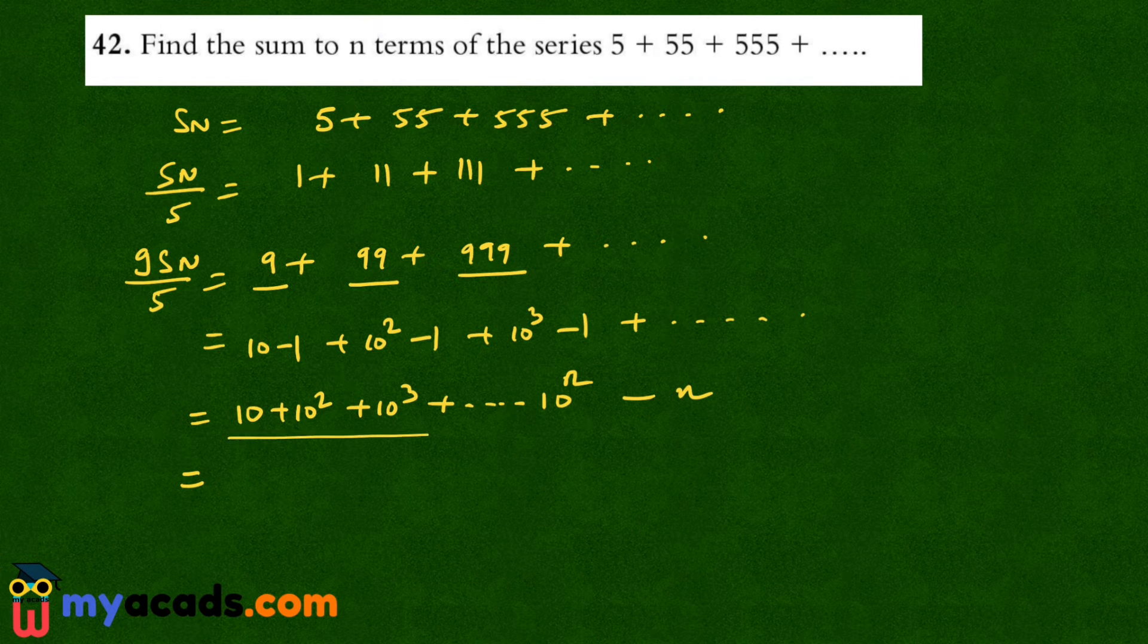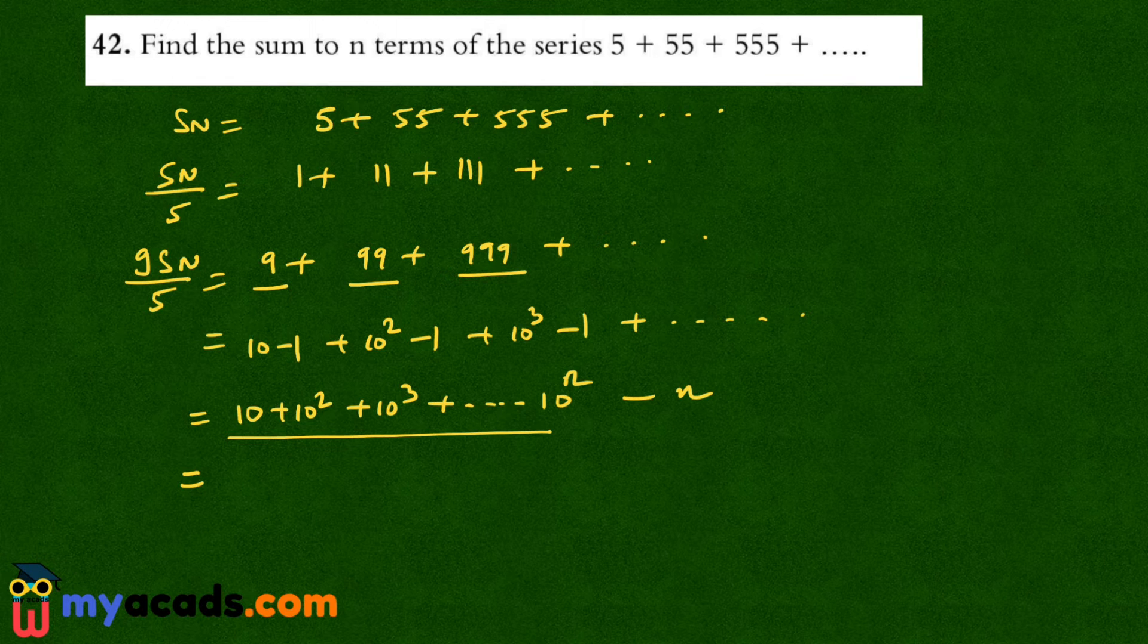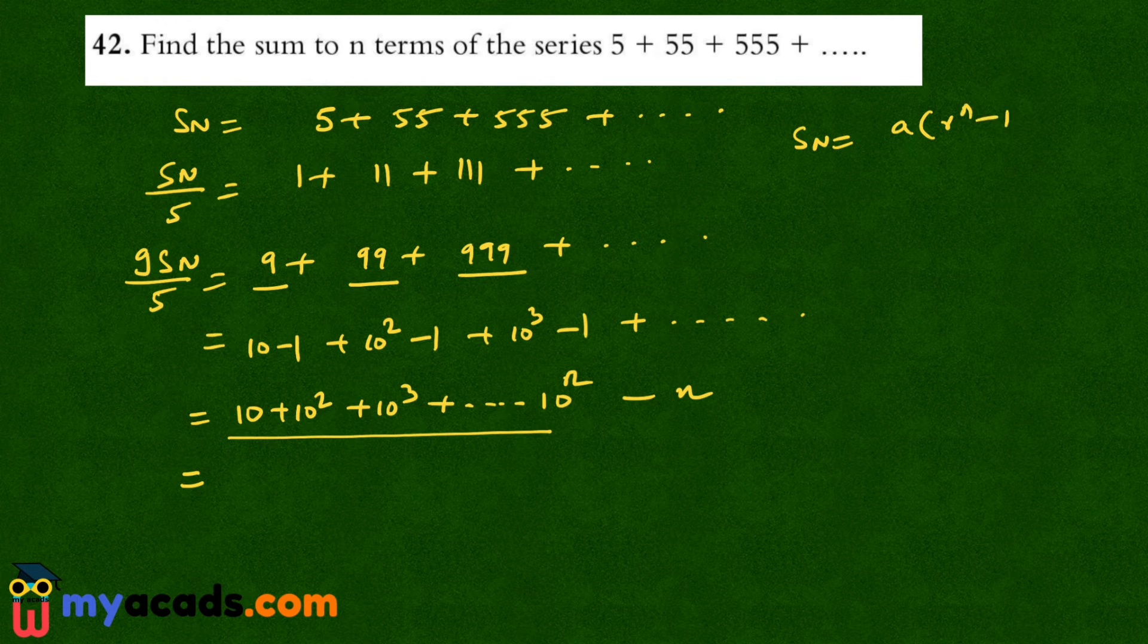Now this is a GP. I have to find the sum of GP. The sum of GP with n terms is a into r raised to the power n minus 1 upon r minus 1.